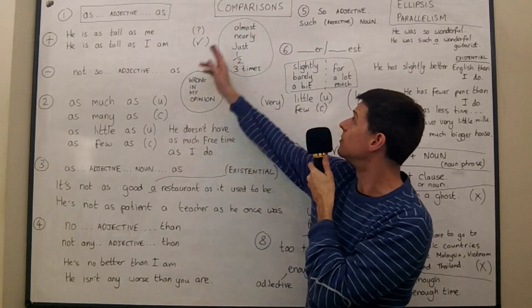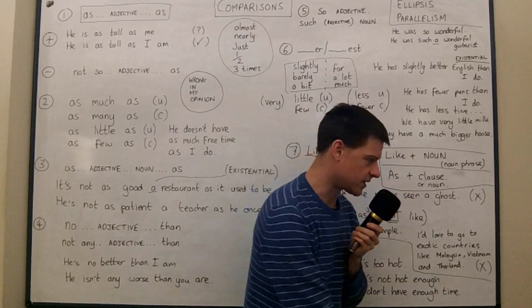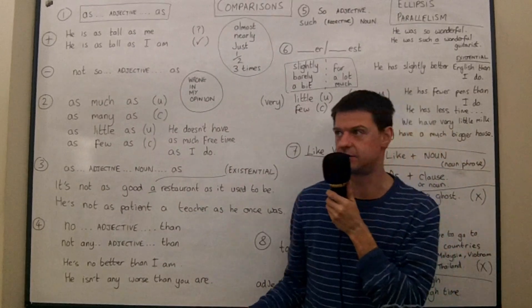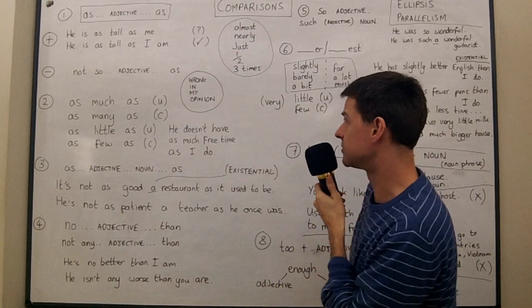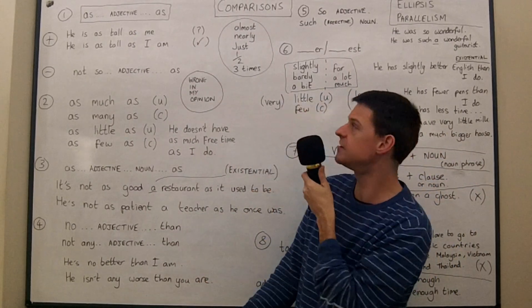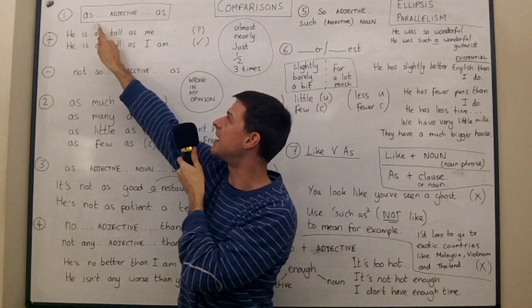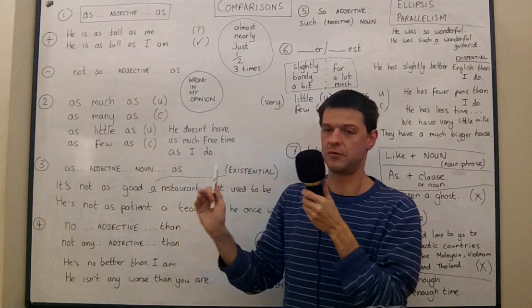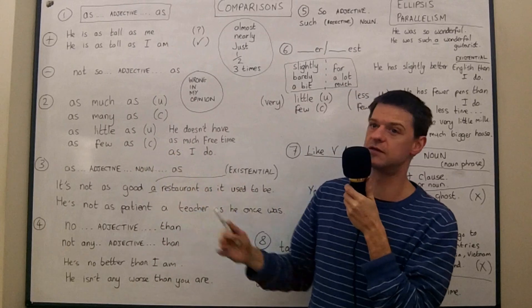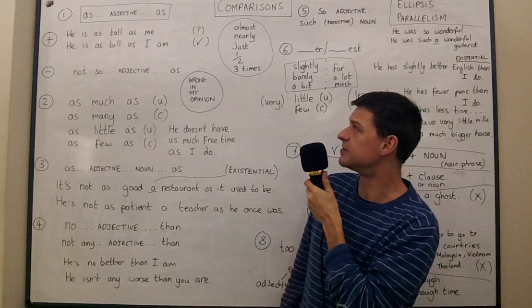Welcome to a class on comparisons. I'm going to try to go into some more detail today about some things I haven't spoken much about. Now the first construction we'll look at is as adjective as, which is used for when you're comparing two things which are equal in some way.